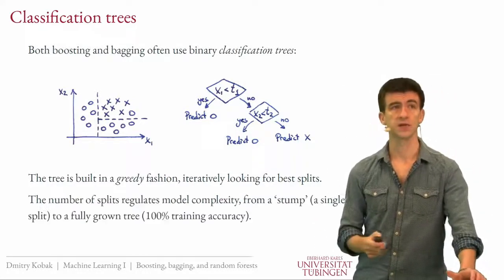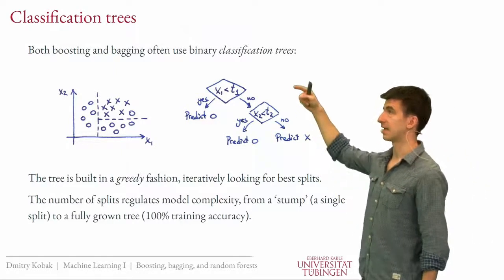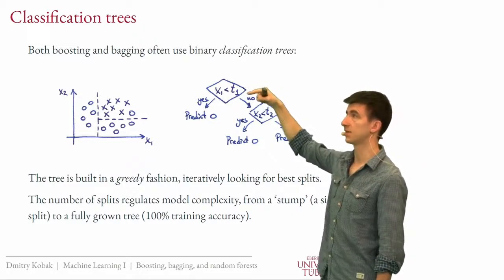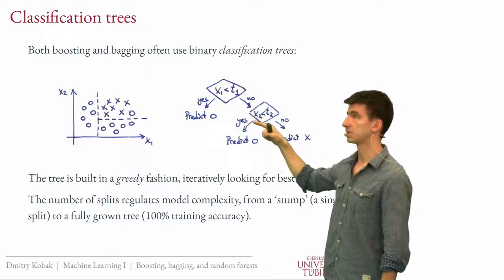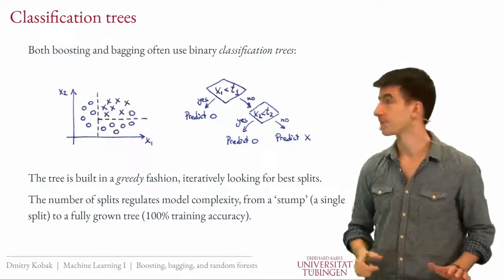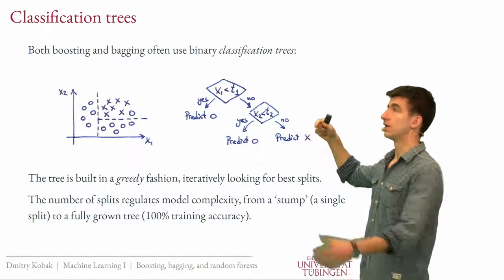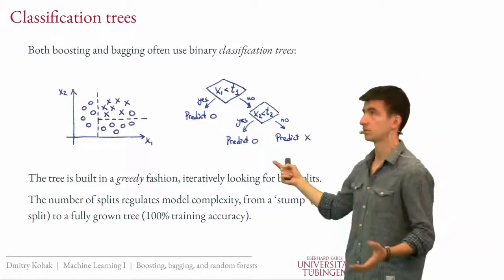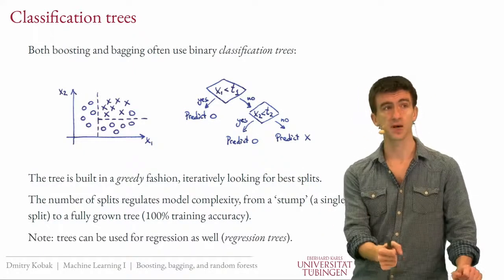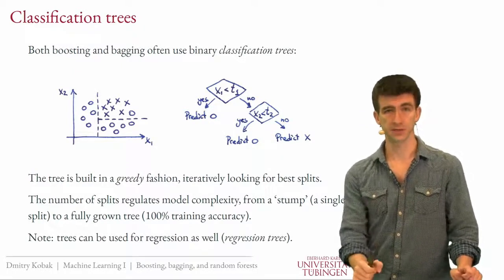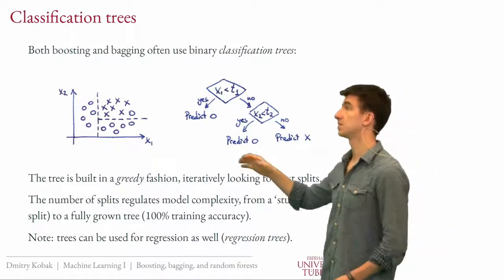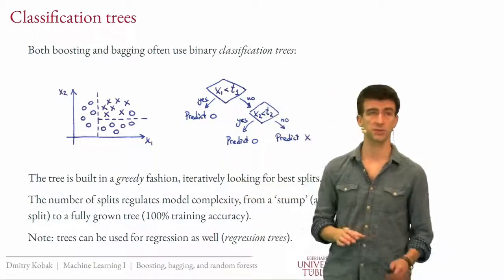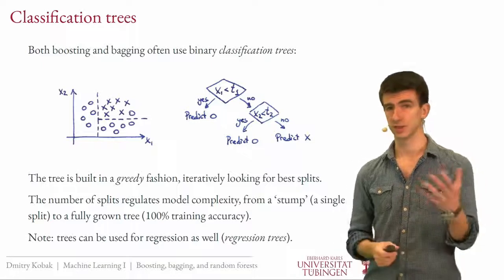The size of the tree regulates model complexity. The simplest possible tree has just one split — called a tree stump — and everything on one side is classified as one class, everything on the other as another. On the other end of the spectrum is a fully grown tree, which achieves 100% training set accuracy. Trees can also be used for regression, called regression trees, where each region predicts a constant value. Here we focus on classification with two classes.